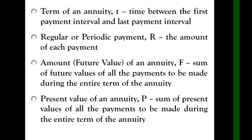Amount or future value of an annuity, F, is the sum of future values of all the payments to be made during the entire term of the annuity. This is the money or amount that you paid during the whole term. Present value of an annuity, P, is the sum of present values of all payments to be made during the entire term of annuity. These are the amounts you paid. In the future value there is already interest, but in the present values these are the principal amounts that you give, that you paid.